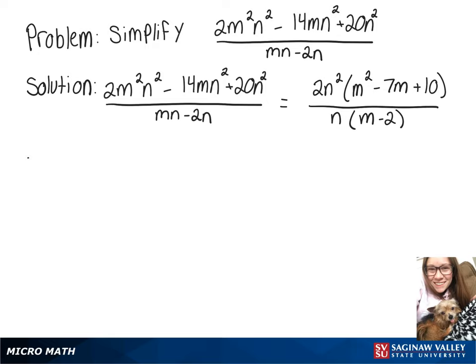Now we have a quadratic on top that we can factor. So we have 2n² times two numbers that multiply together to get positive 10 and add together to get negative 7.